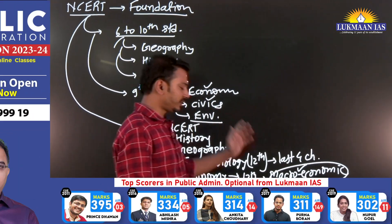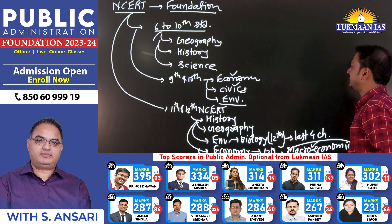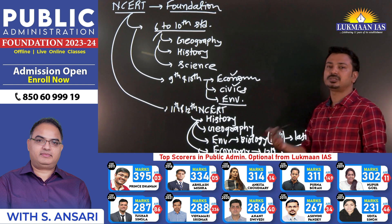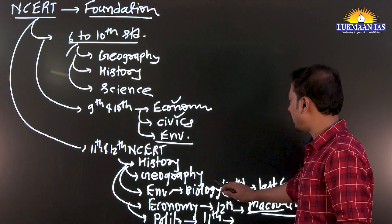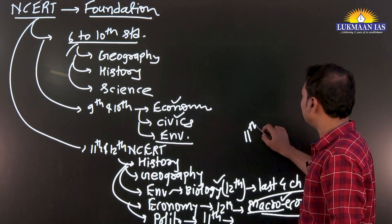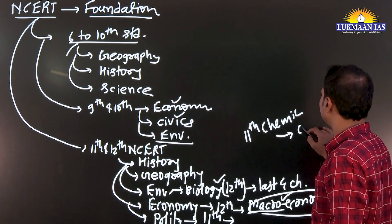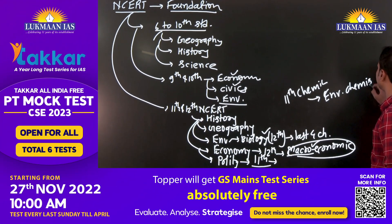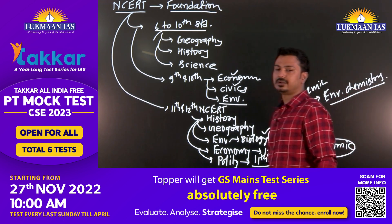For Science and Tech, 10th standard is fine but 11th standard is too technical — questions don't come from there. For Biology, read up to 11th standard. From 11th standard Chemistry NCERT, there is one chapter — 'Environmental Chemistry' — which should be read specifically for the Environment section.